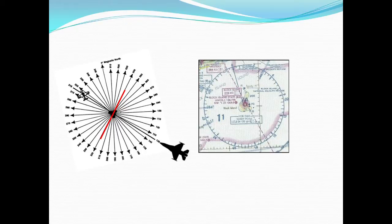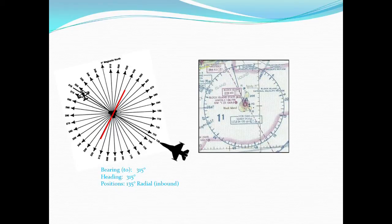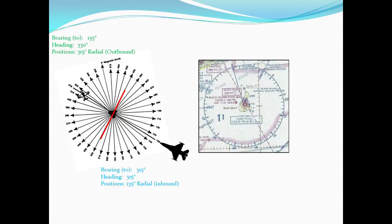Let's take another example and look at the propeller plane on the left hand side. From a VOR standpoint, the propeller plane is sitting on the radial 315 outbound, because he's heading out and away from the VOR station. His heading in his aircraft is probably around 330 degrees. But if you look at his bearing, the bearing itself would be towards the VOR — so in this case his bearing would be 135. Those are key concepts that you really want to get into your head.